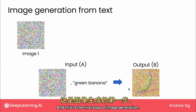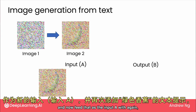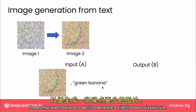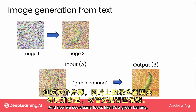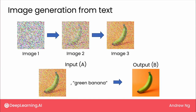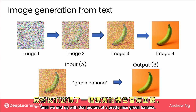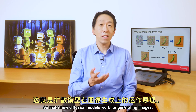This is the first step of image generation. The next step is we take this output image and feed it as the new input, again with the prompt green banana, to get it to generate a slightly less noisy picture. And now we see clearly it looks like there's a green banana, but a pretty noisy one. We do this one more time, and it finally removes most of the noise until we end up with a picture of a pretty nice green banana. So that's how diffusion models work for generating images.